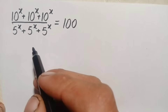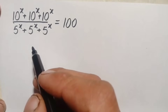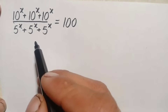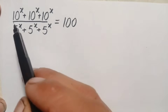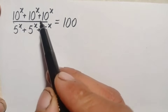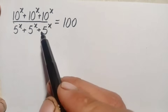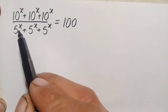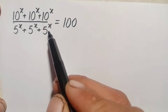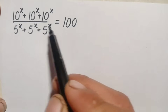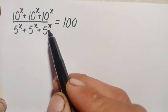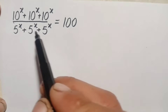Hello everyone, welcome back to Mass Explorer. How to solve this nice and interesting exponential math problem, which is 10 raised to power x plus 10 raised to power x plus 10 raised to power x, divided by 5 raised to power x plus 5 raised to power x plus 5 raised to power x, is equal to 100. So here we will try to find the value of this unknown x.